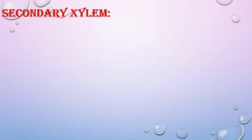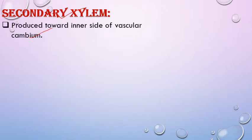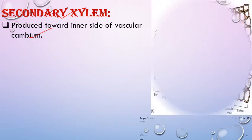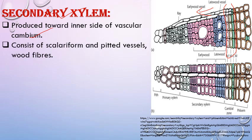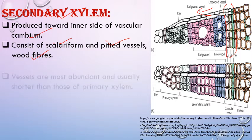Secondary xylem is produced by vascular cambium towards the inner side. The activity of vascular cambium is more towards the inner side. Secondary xylem consists of scleriform and pitted vessels, wood fibers, and xylem parenchyma. The vessel size is shorter in case of secondary xylem as compared to primary xylem. Annular and spiral thickenings are completely absent in secondary xylem vessels.